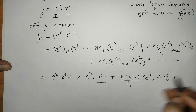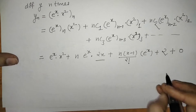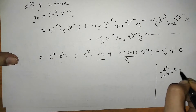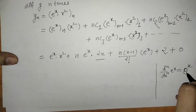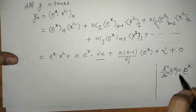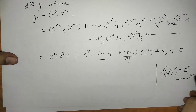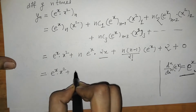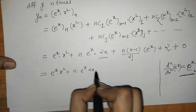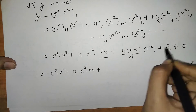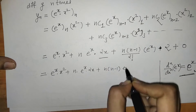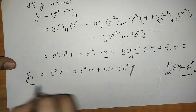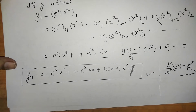Since the third derivative of x squared is 0, that term vanishes. We know the nth derivative of e raised to x is e raised to x. So simplifying: yn equals e raised to x times x squared, plus n times e raised to x times 2x, plus n(n-1)/2 times e raised to x times 2. The 2 in the numerator and 2! in the denominator cancel. This gives us the nth derivative of the given function.